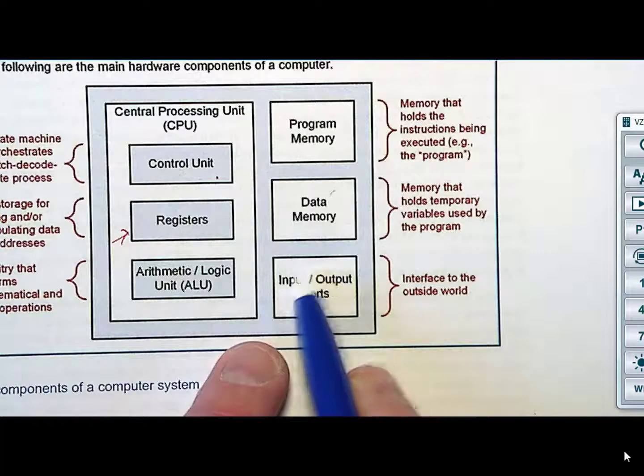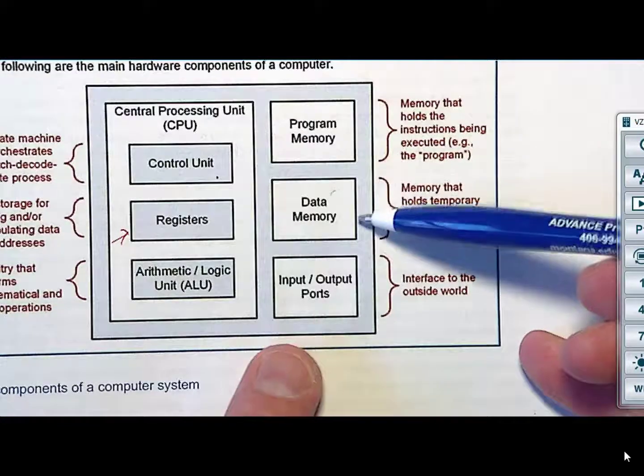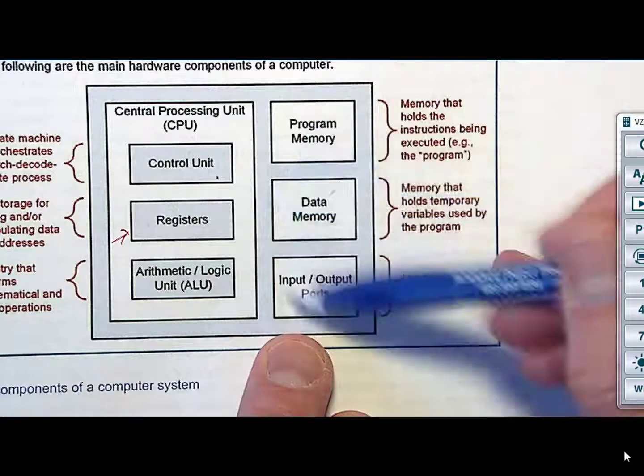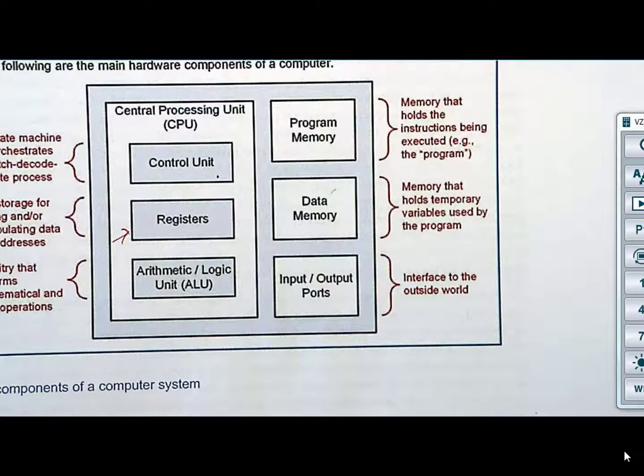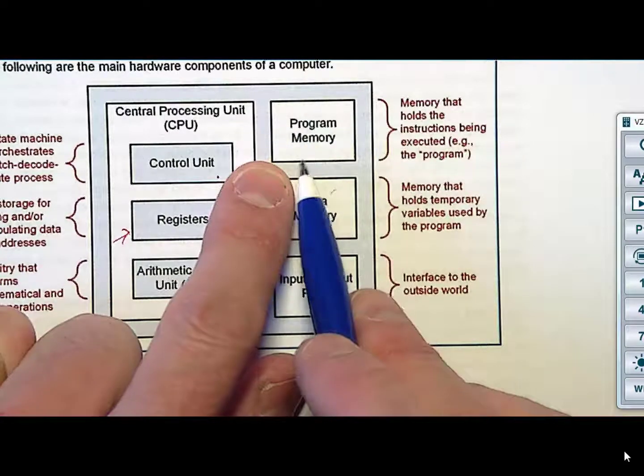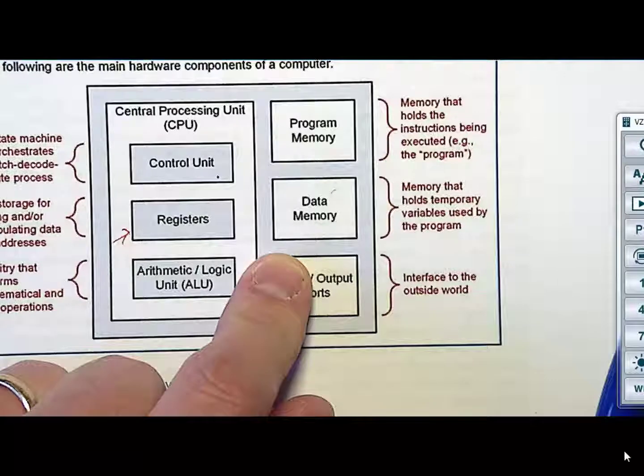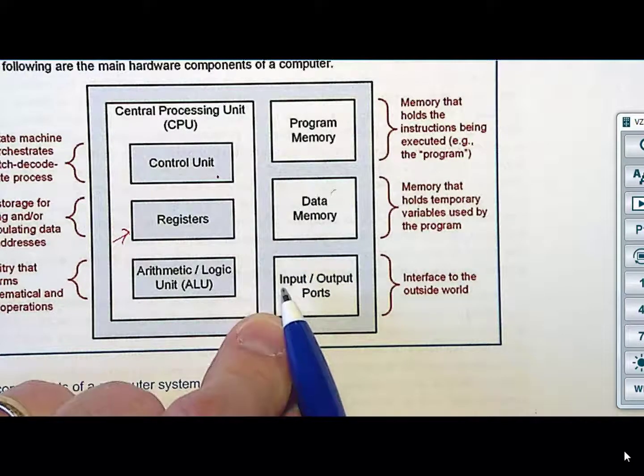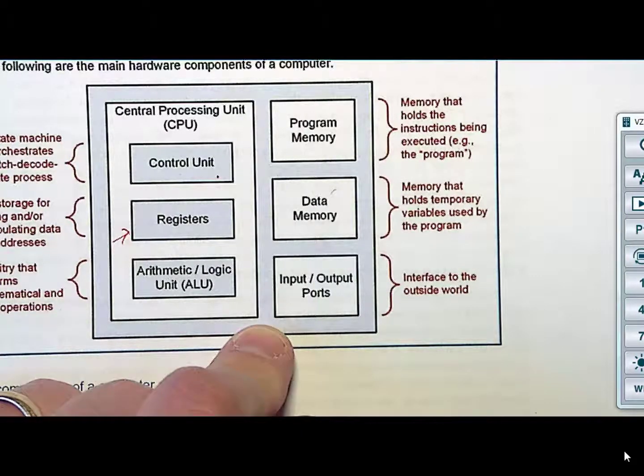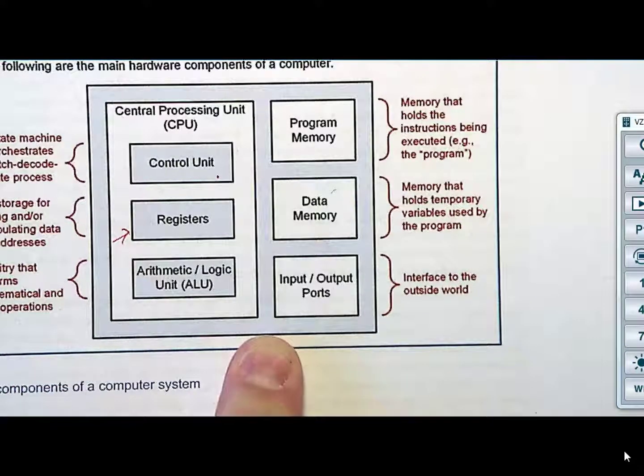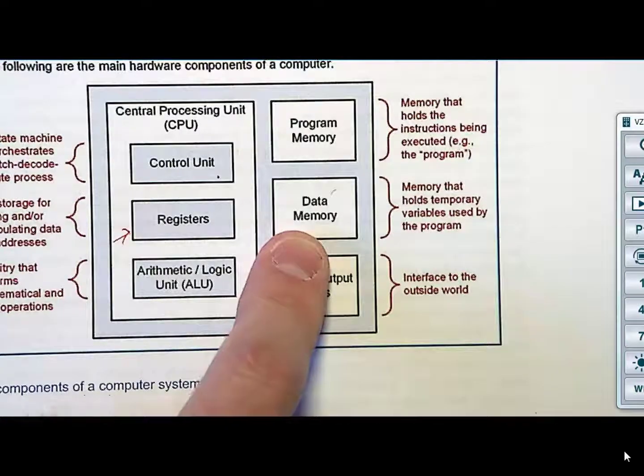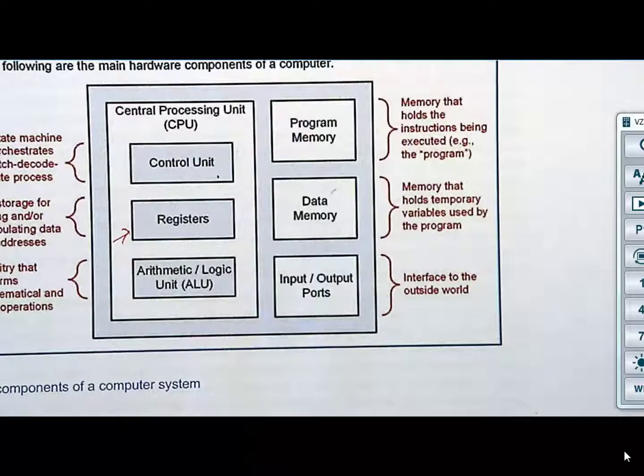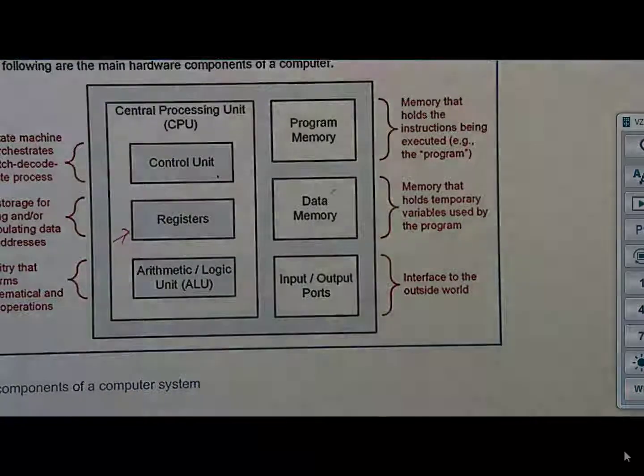The reason that we kind of lump the inputs and the outputs over here underneath program memory and data memory, it's not by chance. What we need to do is we need to architect the whole memory system to have a way that we can consistently access it. And the way that you consistently access memory is you have it memory mapped into an address. So, there's going to be addresses for the program memory. It might be 0 to 10. And then you might have addresses for the data memory, 11 to 20. And then you're going to assign addresses for every single input and output port. So, maybe address 21 is your monitor. 22 is your mouse. 23 is your keyboard. But that's the way you handle inputs and outputs, is they are given an address, and that allows you to read and write to them just like you read and write to data memory. This feels pretty good.